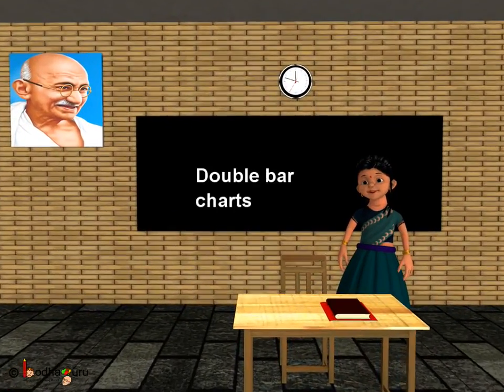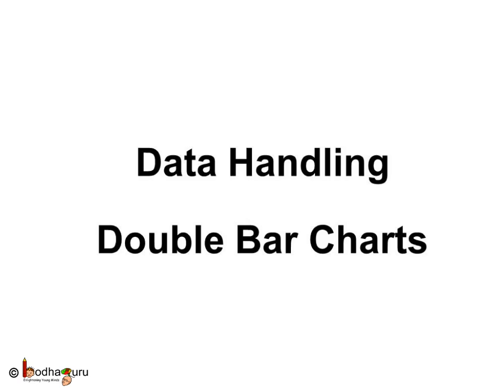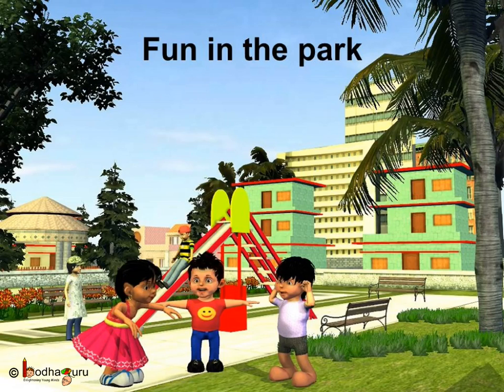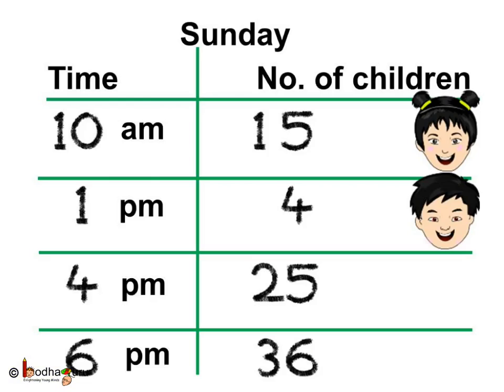Good morning children. Today we shall learn more about the bar charts which we already know. Let's again take the example we used for bar charts. There is a park in the society and the society did a survey and made a chart showing the number of children who came to the park at four different times on Sunday. At 10 am 15 children were there, at 1 pm only 4 children were there, at 4 pm 25 children were playing, and at 6 pm 36 children were there.